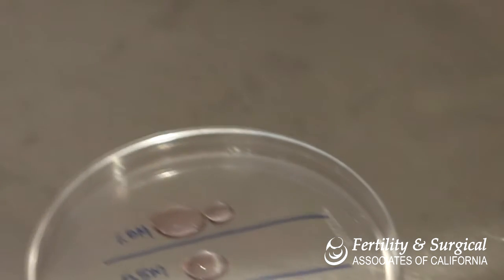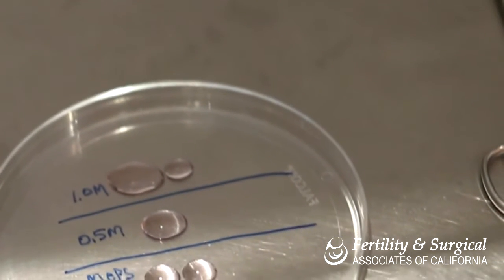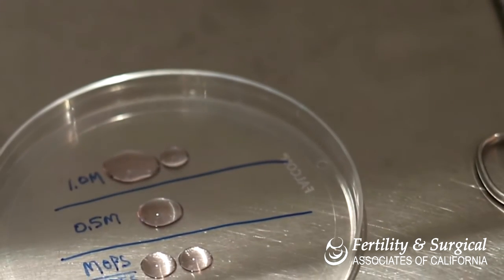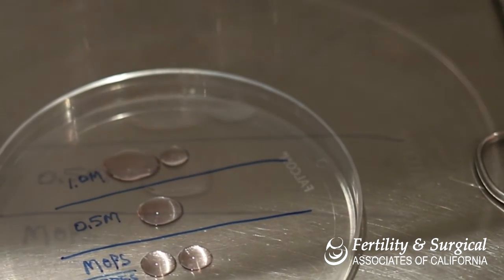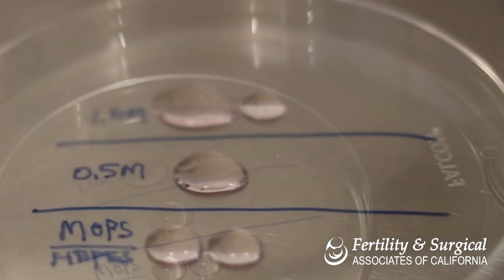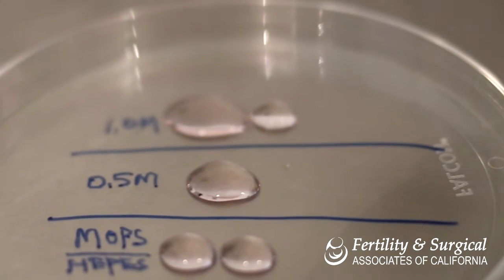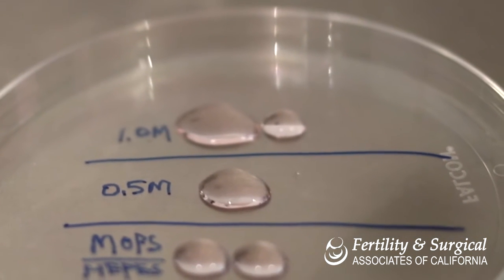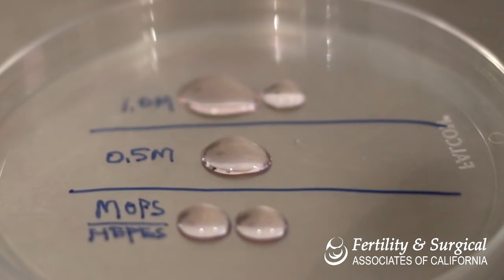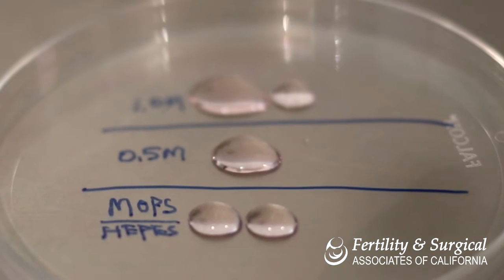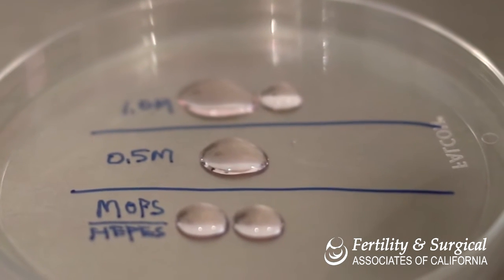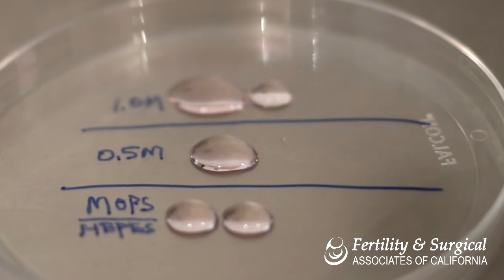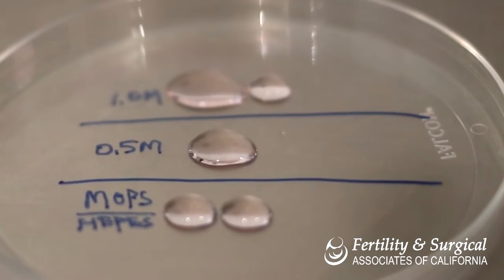Step 3: Prepare a dish by first labeling with the patient's name. Place a large drop of 1.0 molar sucrose solution in the dish. It can be helpful to make it a long shape to accommodate the length of the straw bubble. Place a 50 micro drop of 0.5 molar sucrose solution nearby.